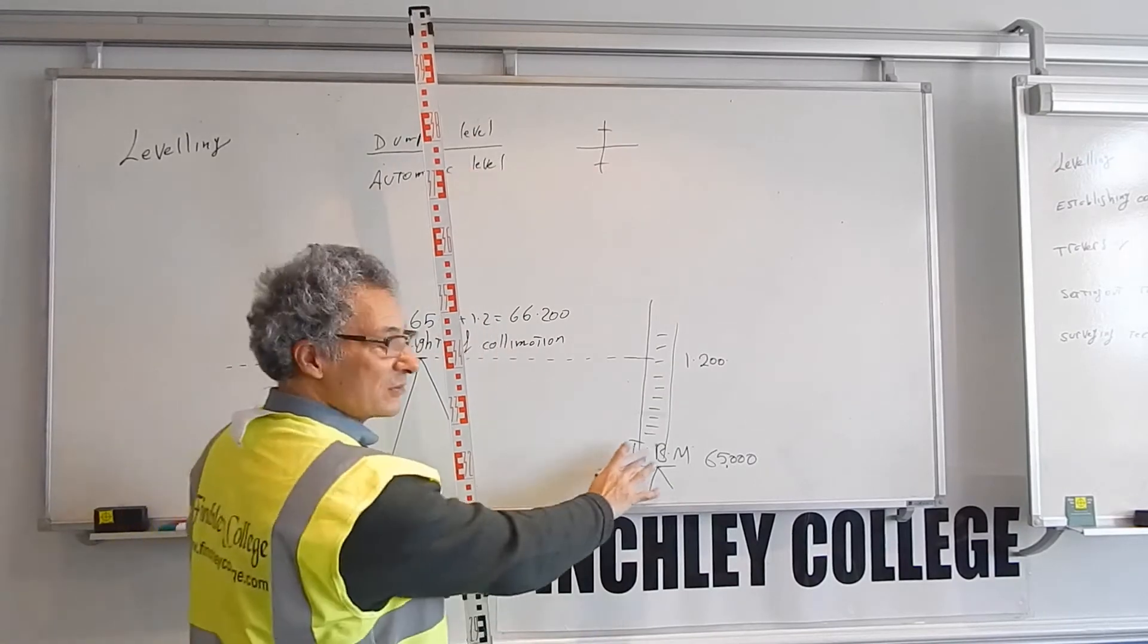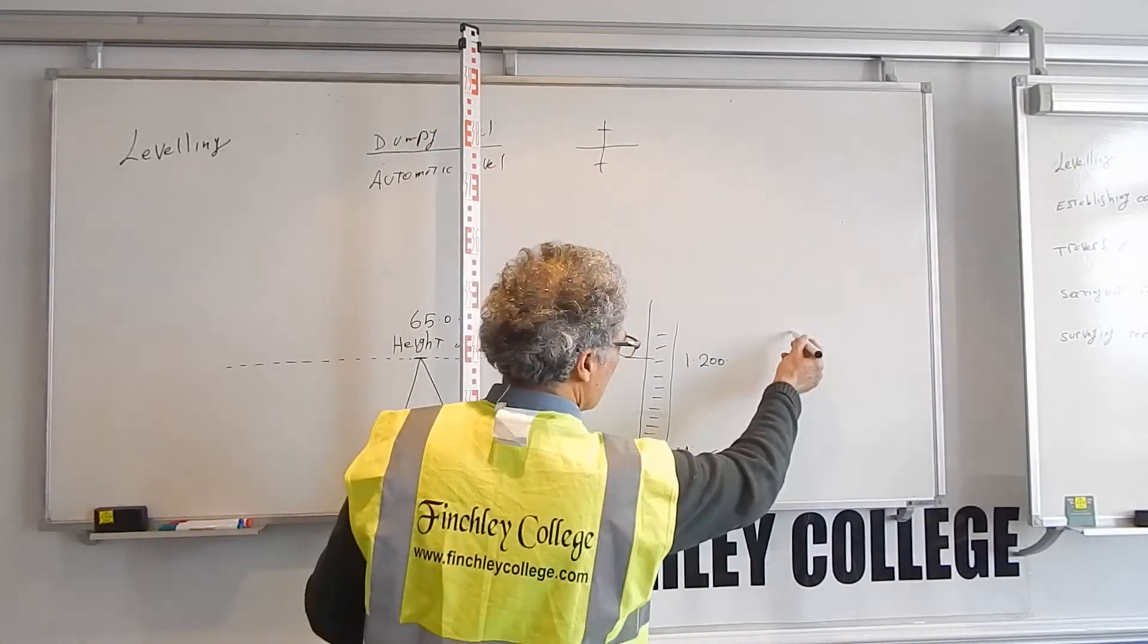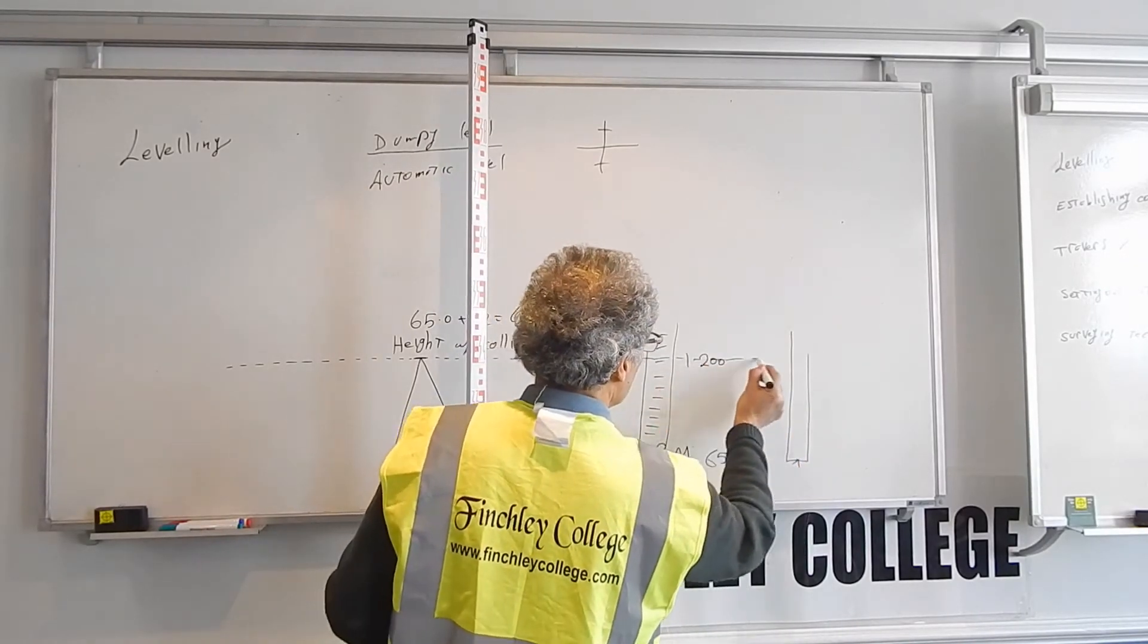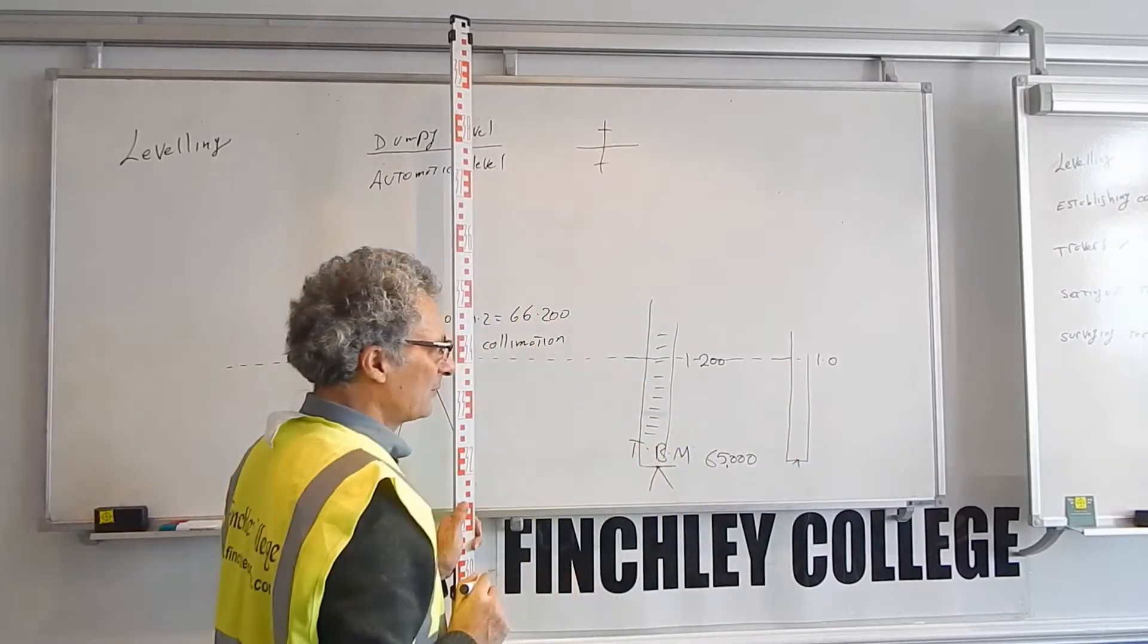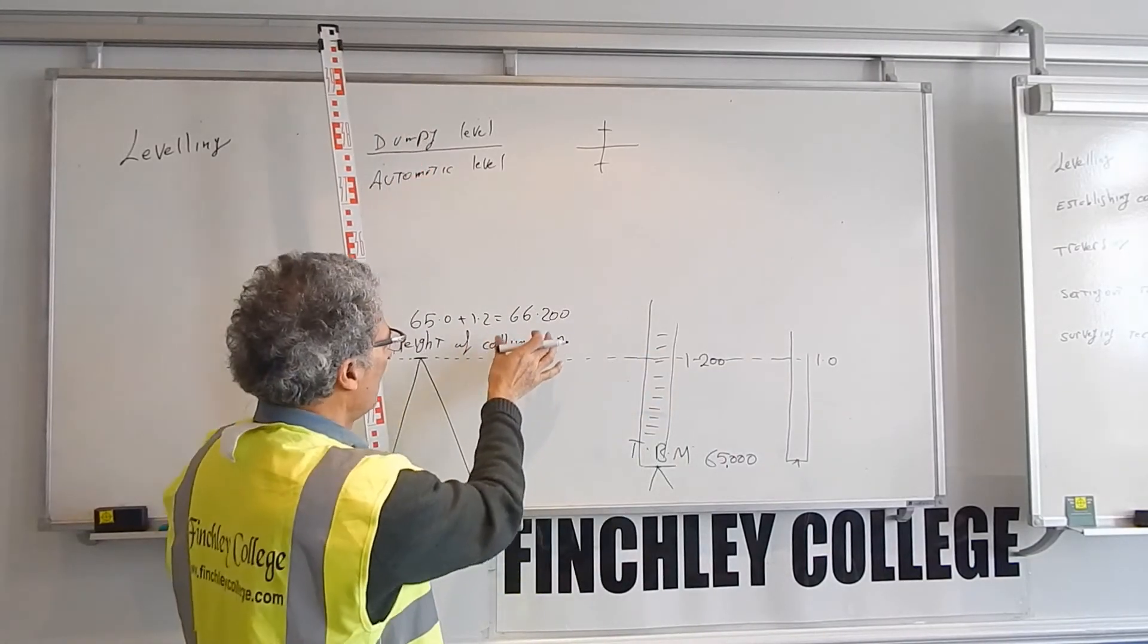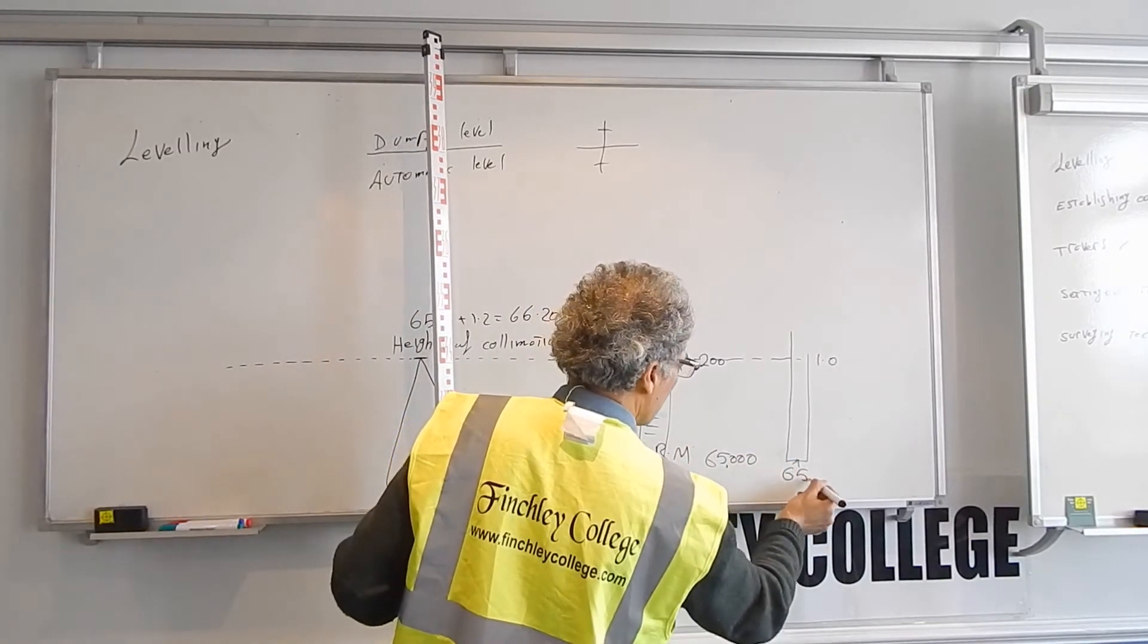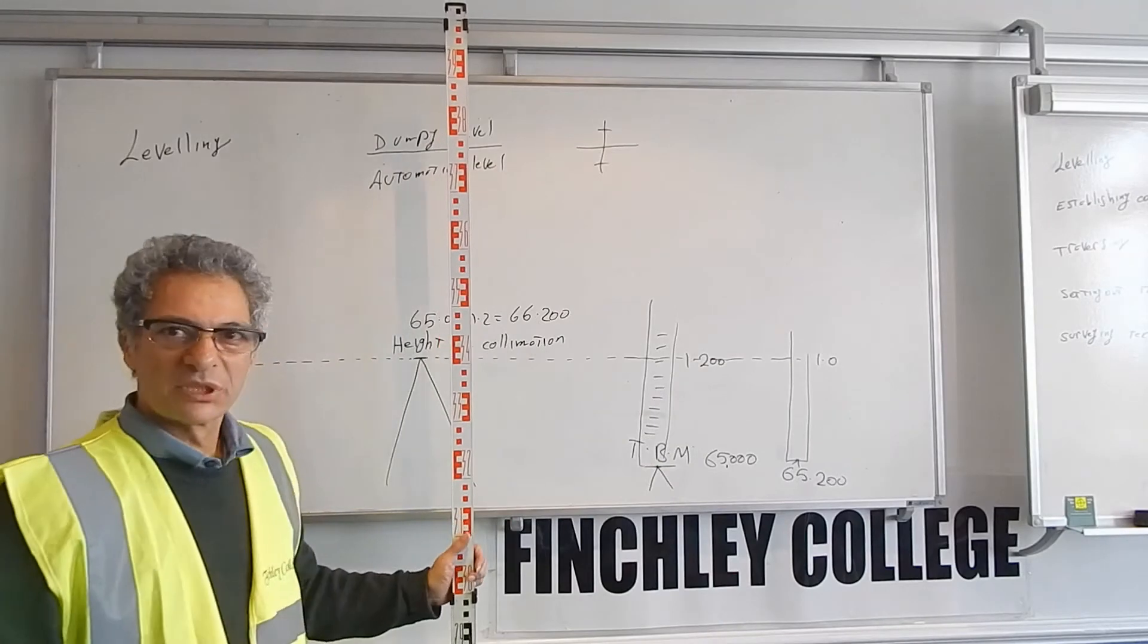Once we know the height of the instrument, we're finished with the TBM. If we hold the staff somewhere else and take a sight and read, for example, 1 meter, that means the bottom of the staff is 1 meter below the height of collimation. So if the height is 66.2, then this point will be 65.2.